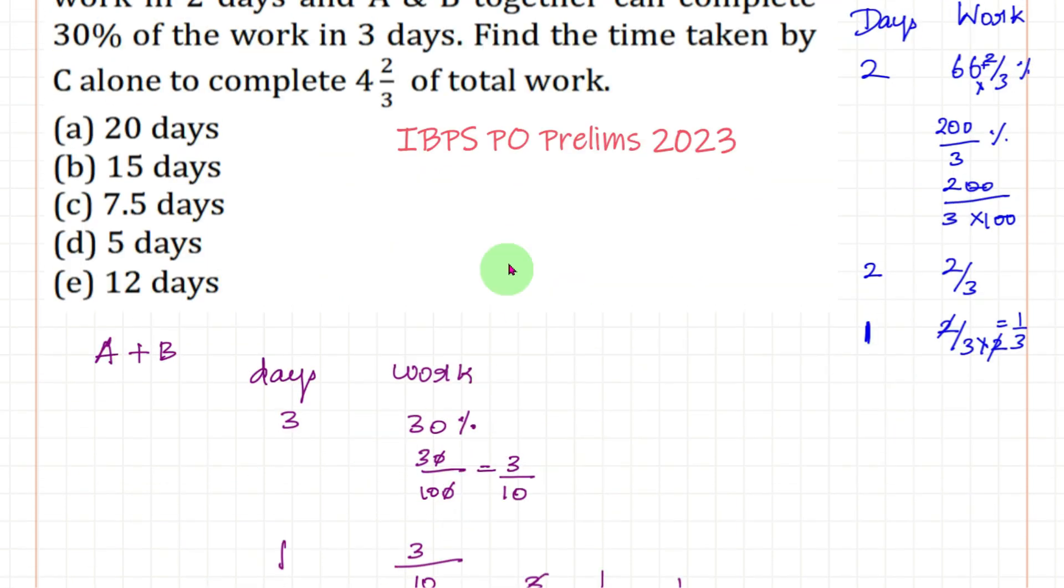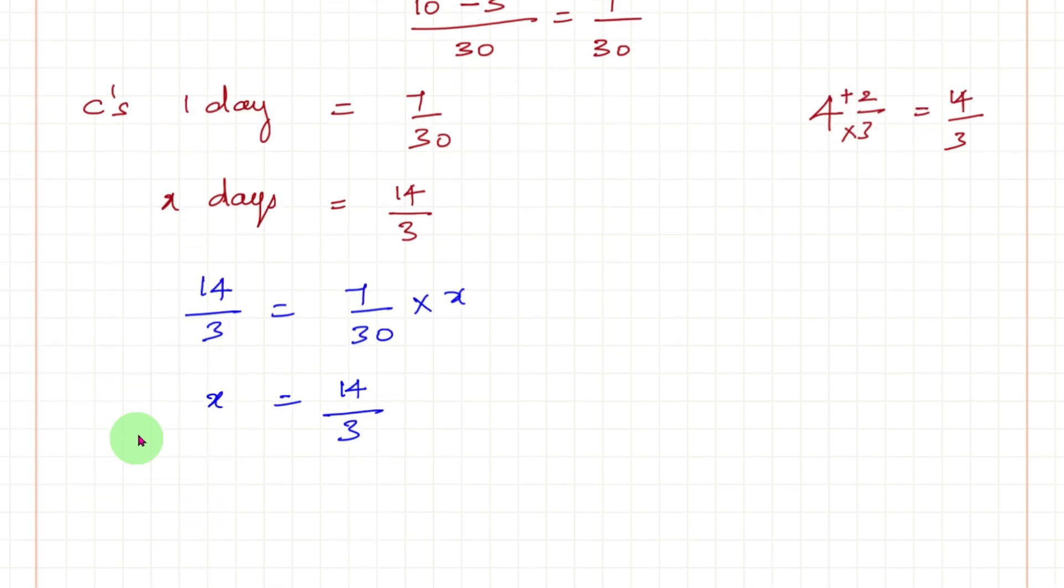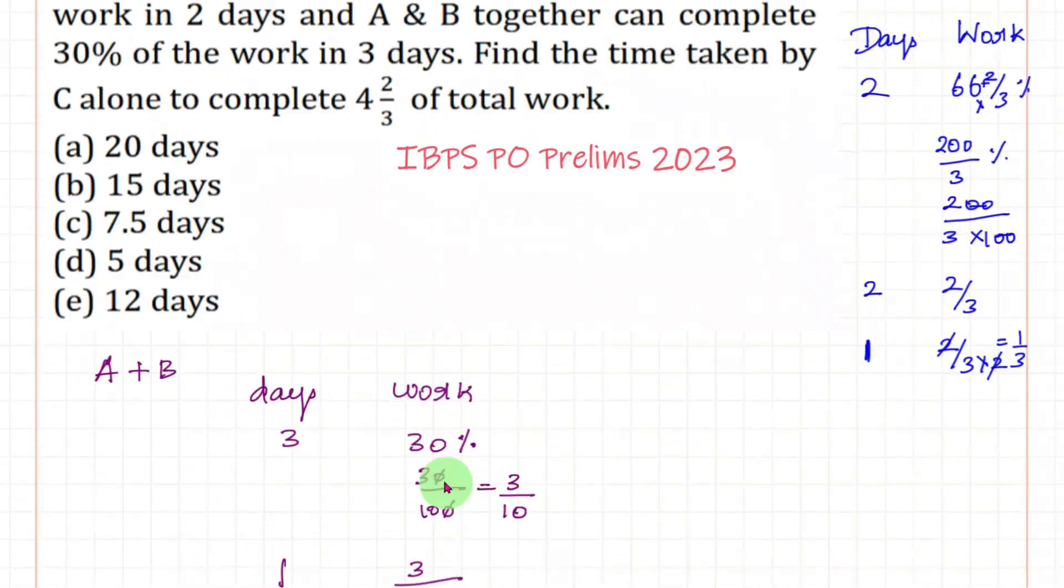Same thing goes here. We have to find for 4 2/3 of total work. So 4 2/3 is 3 times 4 is 12 plus 2 is 14/3. In 1 day he is finishing 7/30 of work. How many days to finish 14/3 of the work? We can cross multiply. 14/3 equals 7/30 times x. So x equals 14/3 divided by 7/30, or taking this to the other side it becomes inverse 30/7. So 14/3 times 30/7, which equals 20 days. The time taken by C to complete 14/3 of work is 20 days.